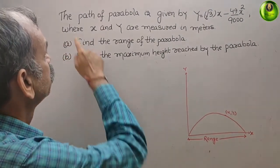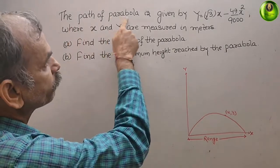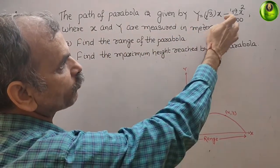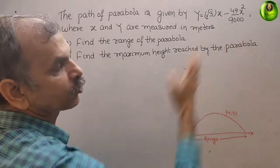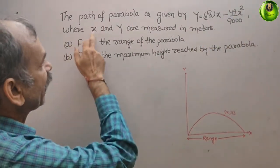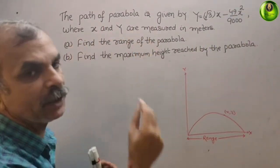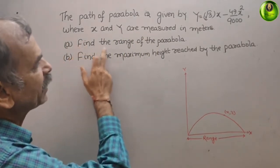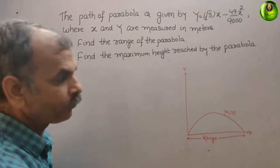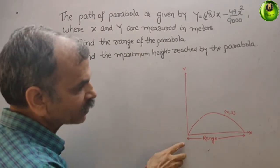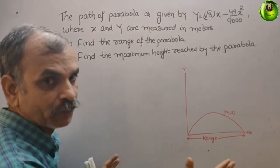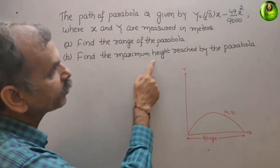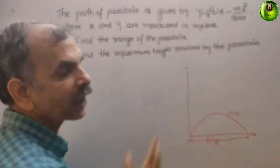Your question is: the path of a parabola is given by y = √3·x − (49/9000)·x², where x and y are measured in meters. We are told to find the range of the parabola — that means the full range, how much it covers. Second, find the maximum height reached by the parabola.